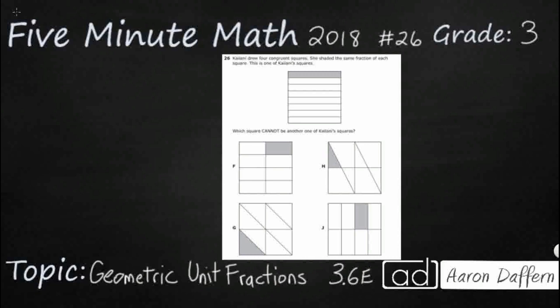So we have a word problem here. Kehlani drew four congruent squares, but there's five squares here, and that's going to be key. She shaded the same fraction of each square, so we're looking at fractions. This is one of Kehlani's squares, and then one of these cannot be one of her squares. So this square that circled at top plus three others make her four squares, and then our answer that we're looking for is the one that is not, the one that does not work.